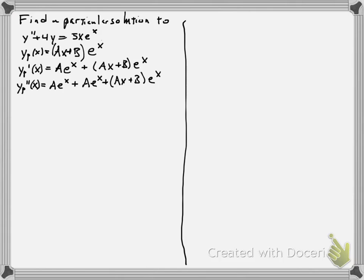notice that there's really two A e to the x. So we have 2A e to the x. Plus, if I actually distribute in the second derivative, I get also a B e to the x, and then plus an Ax e to the x.